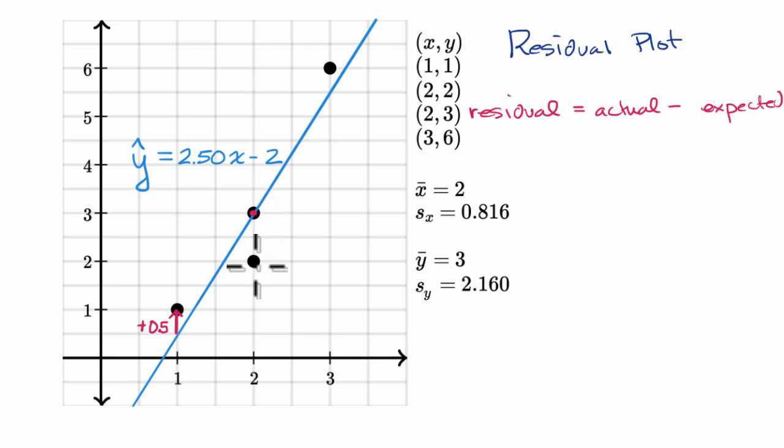For this point right over here, the actual when x equals two for y is two, but the expected is three. So our residual over here, once again, the actual is y equals two when x equals two.